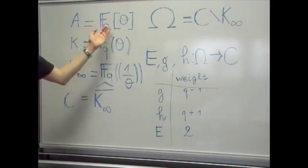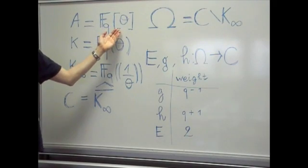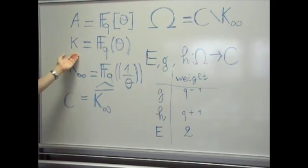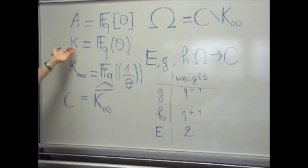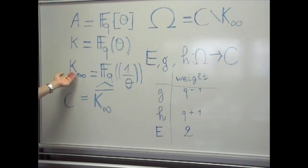Let A be the polynomial ring in theta, K its fraction field. K is endowed with the theta-inverse edic valuation. For this valuation we can complete K and obtain the field K-infinite.